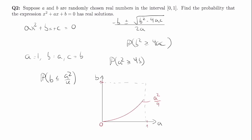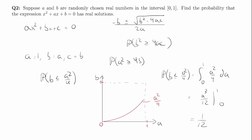Looking at this picture, we draw a on the horizontal axis and b on the vertical axis, with the curve a²/4 plotted. For a given value of a, b will satisfy b ≤ a²/4 only if b is below this curve. So what we want to find is the area under this curve, which is just an integral. The probability that b ≤ a²/4 is the integral from zero to one of a²/4 da. Solving this, we get a³/12 evaluated from zero to one, which is just 1/12. So the probability that the expression has real solutions is 1/12.